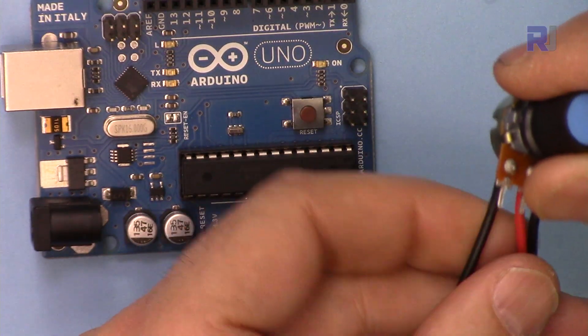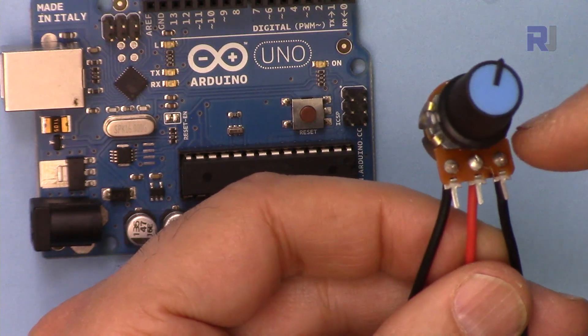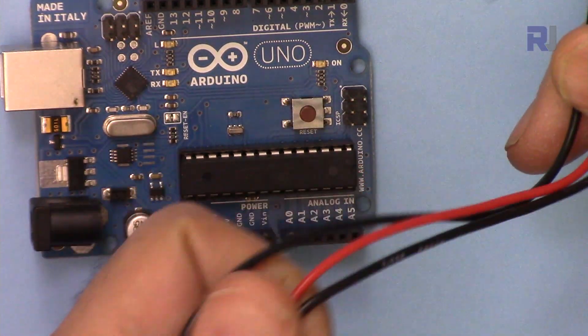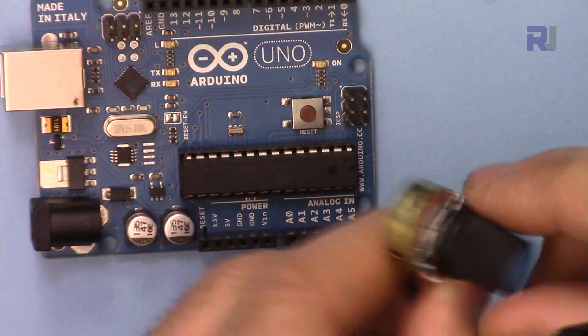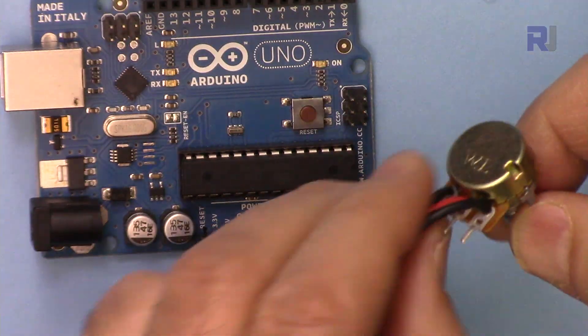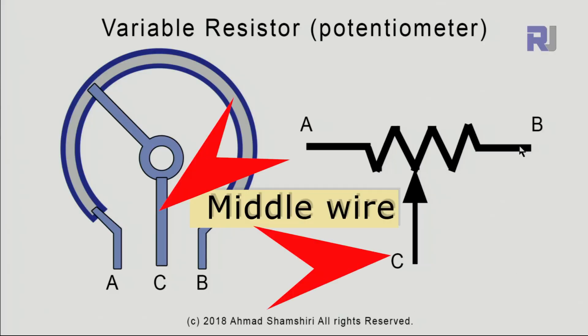This variable resistor or sometimes people call it potentiometer has three wires or three pins. I've connected here three wires and you will get it something like this without wire.